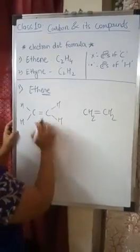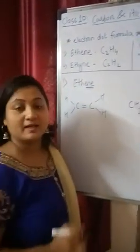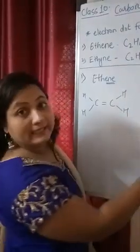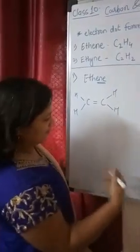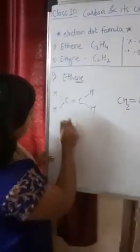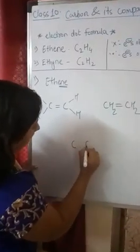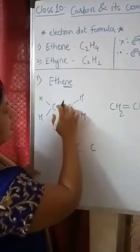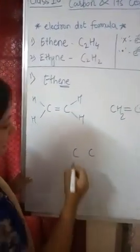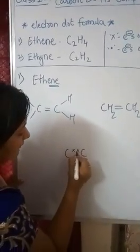Now we will write the condensed structural formula: CH2=CH2. This CH2 double bond CH2 — so this is the condensed structural formula for ethene. Now immediately we will draw the electron dot structure as well. Two carbons — here a double bond is present.